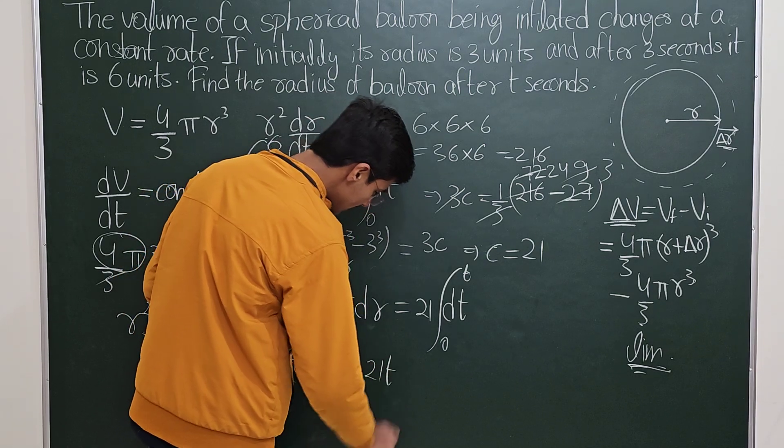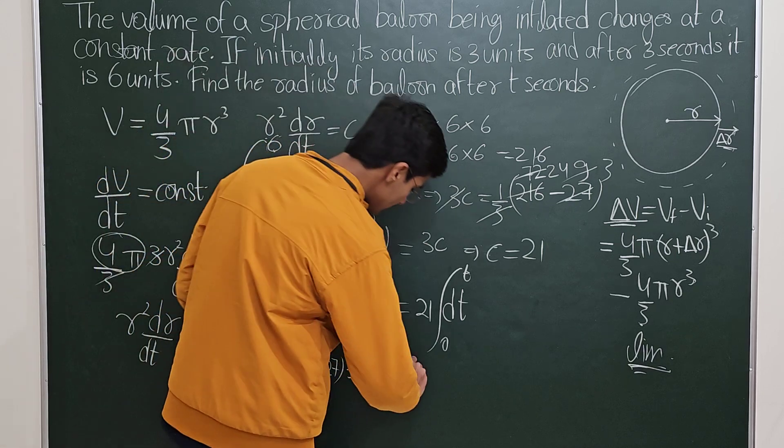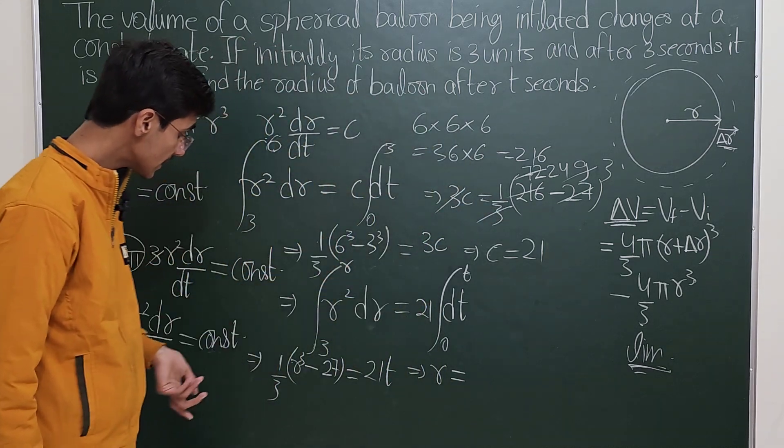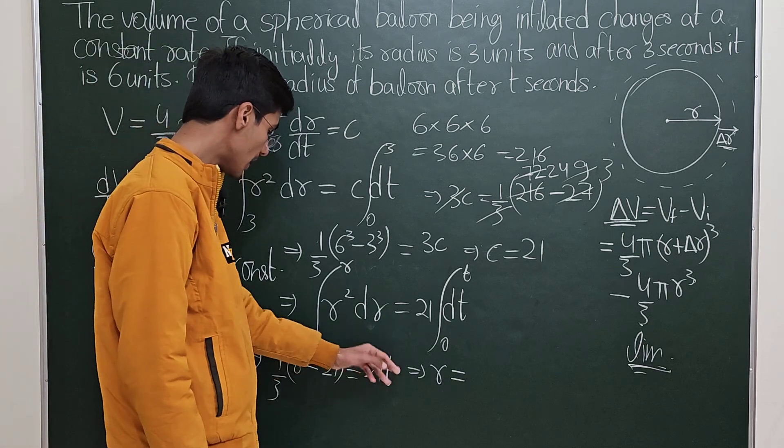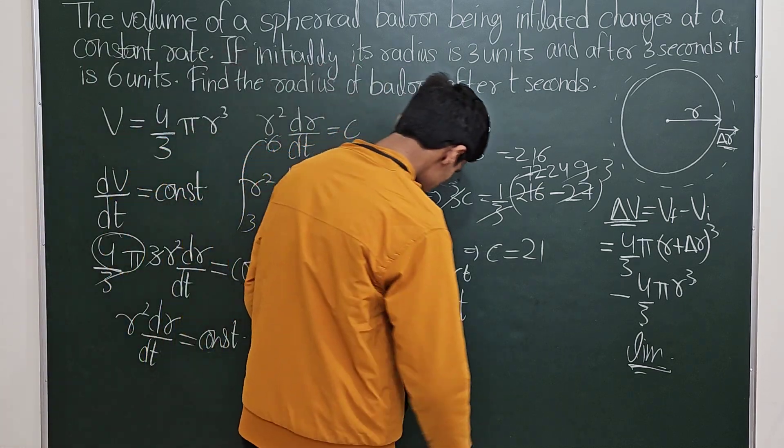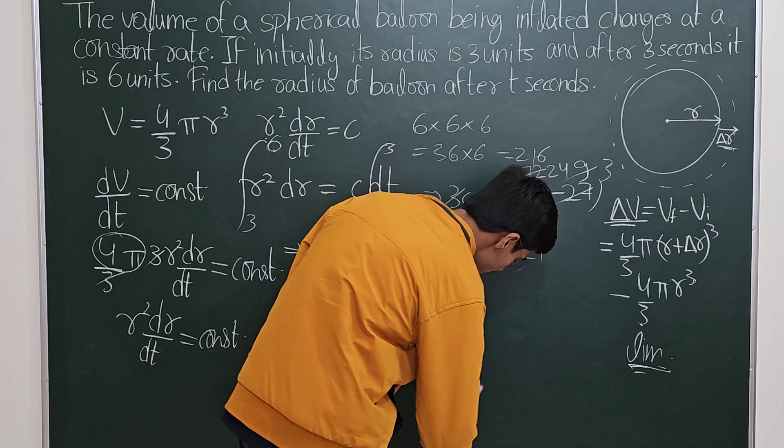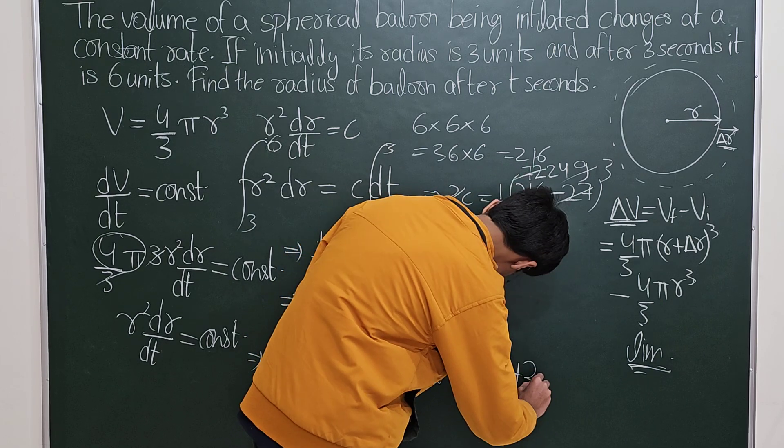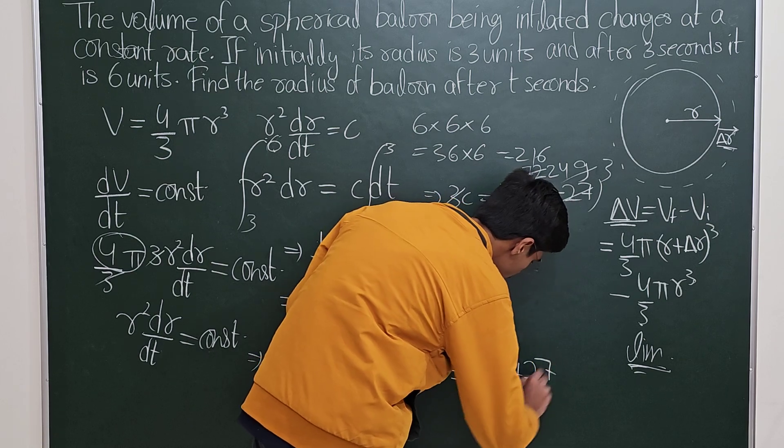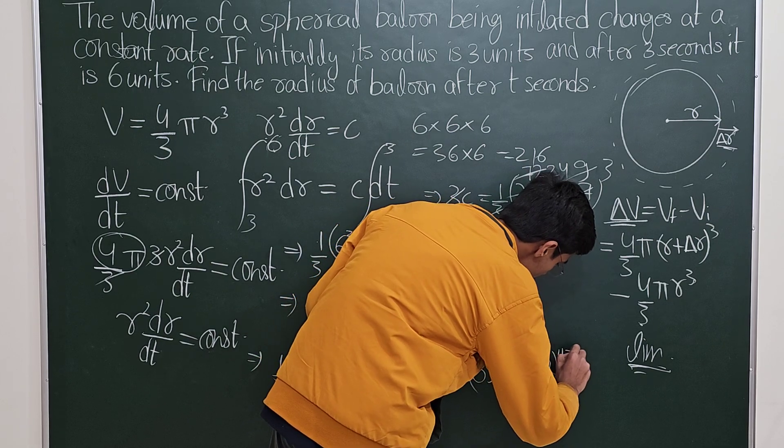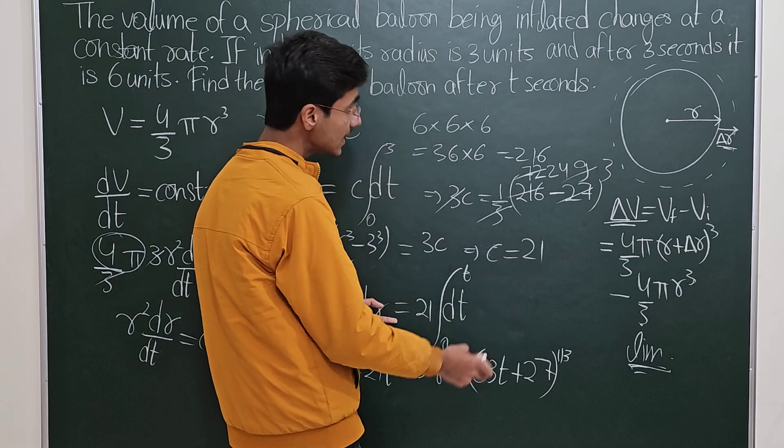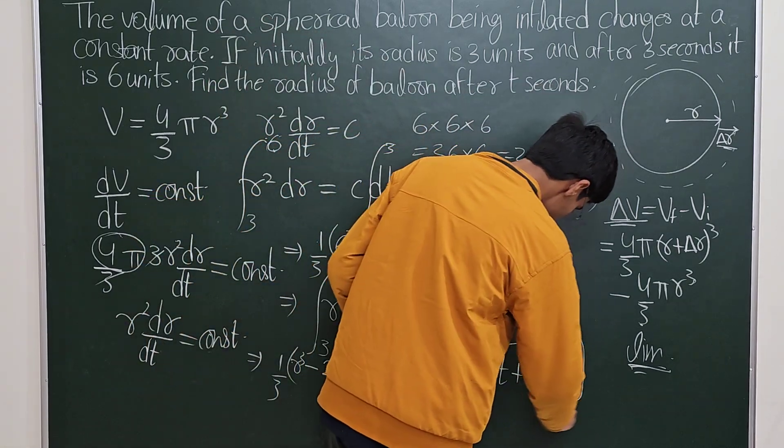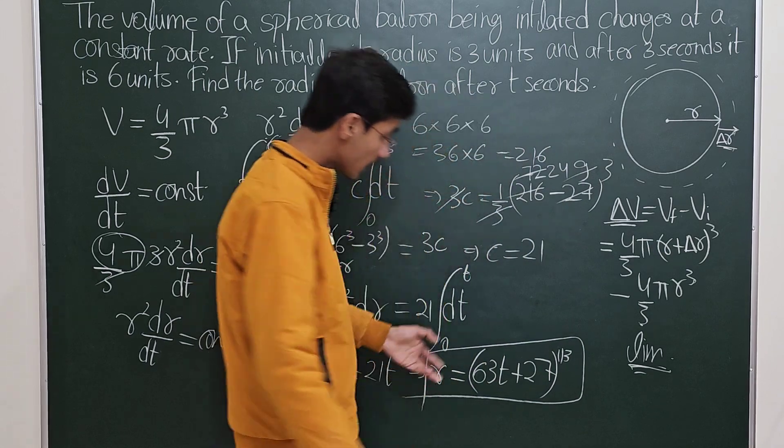This basically tells you that r³, in fact you can just straight up write that r should equal (63t + 27)^(1/3). This is basically expressing the radius of this balloon, this inflating balloon, as a function of time. At time t, the radius is r.